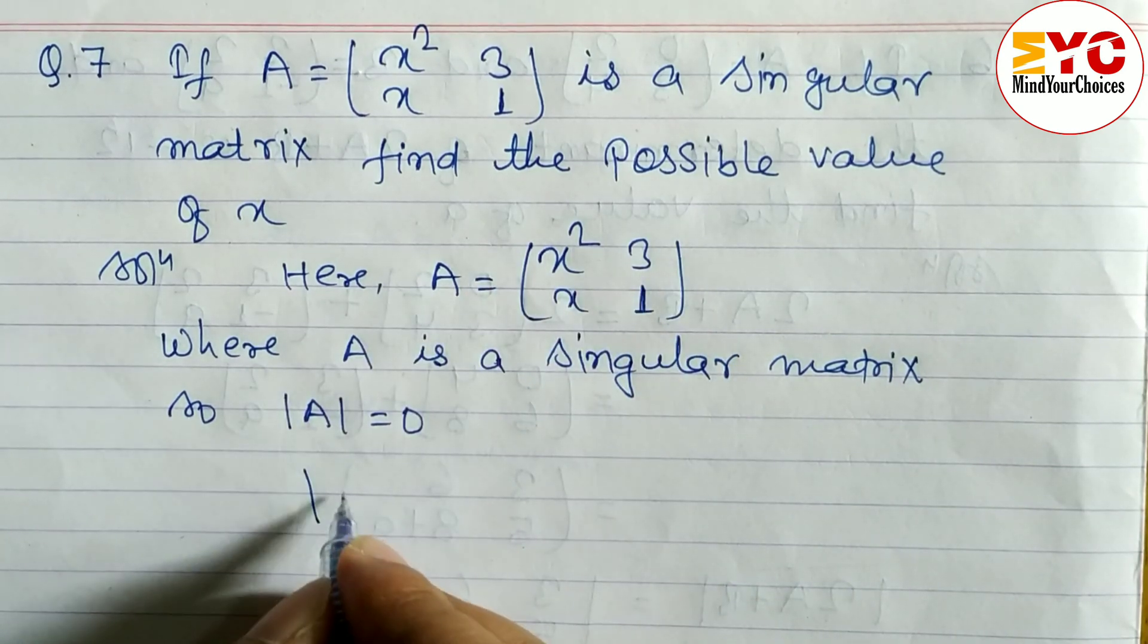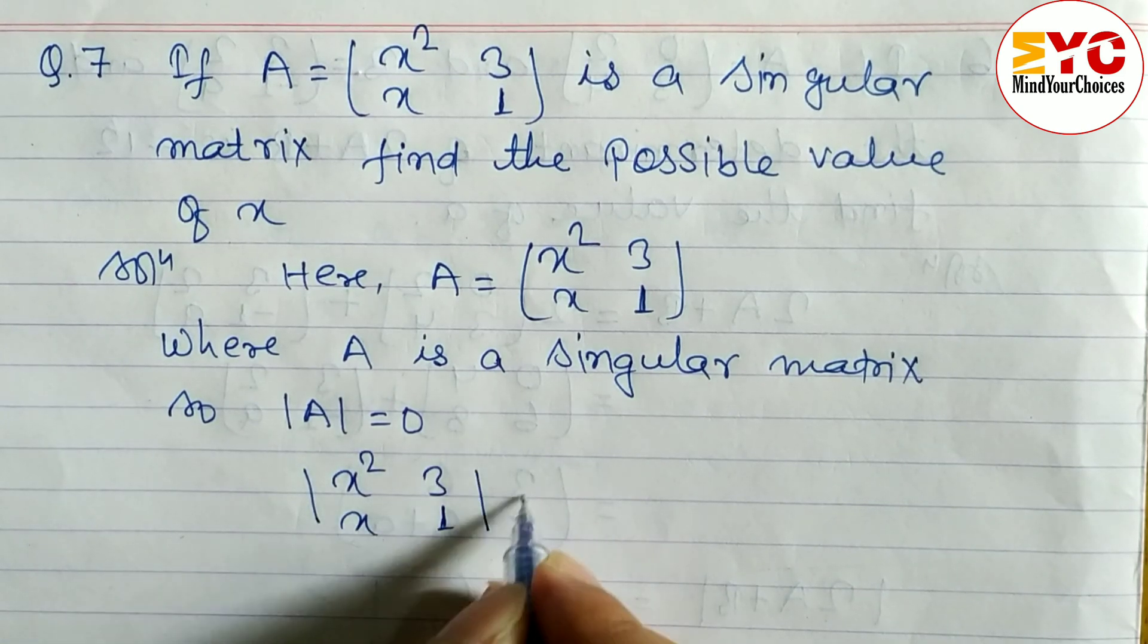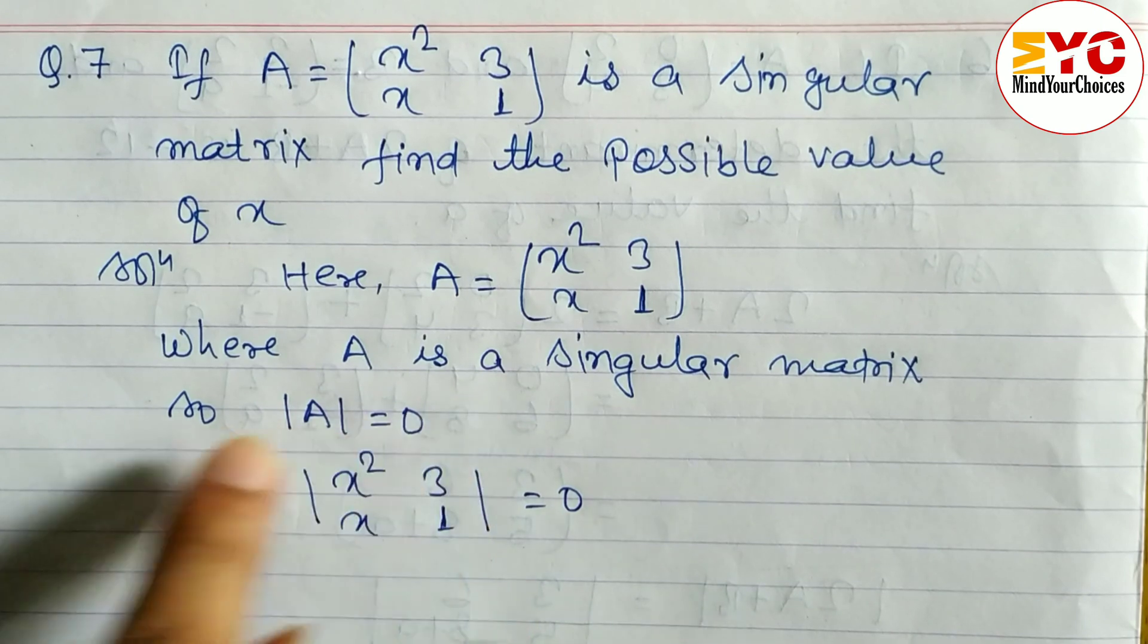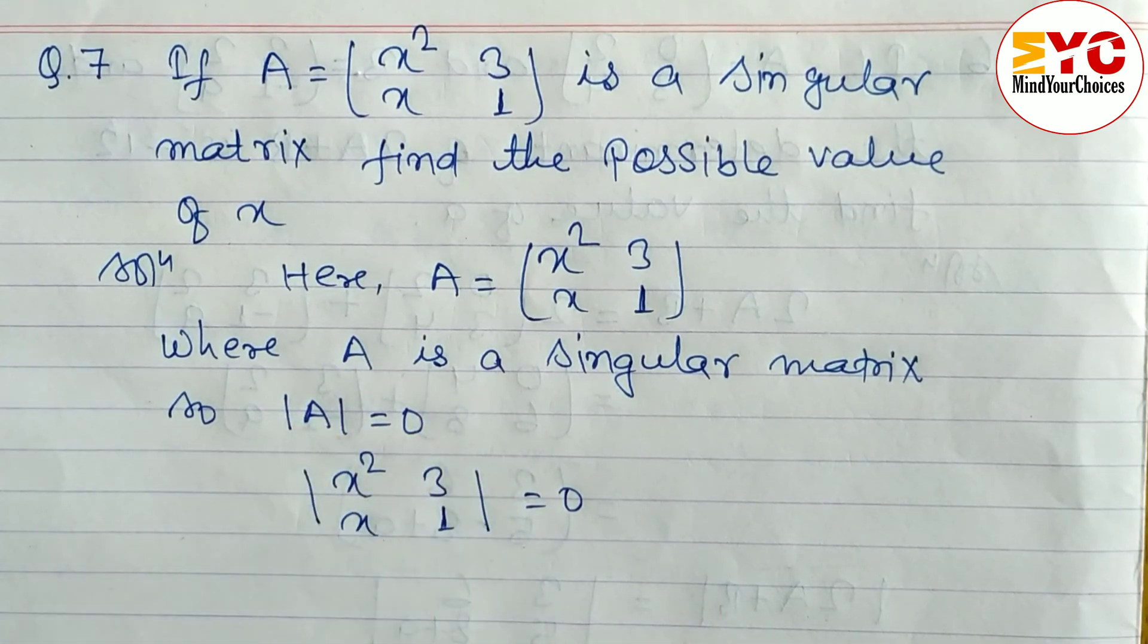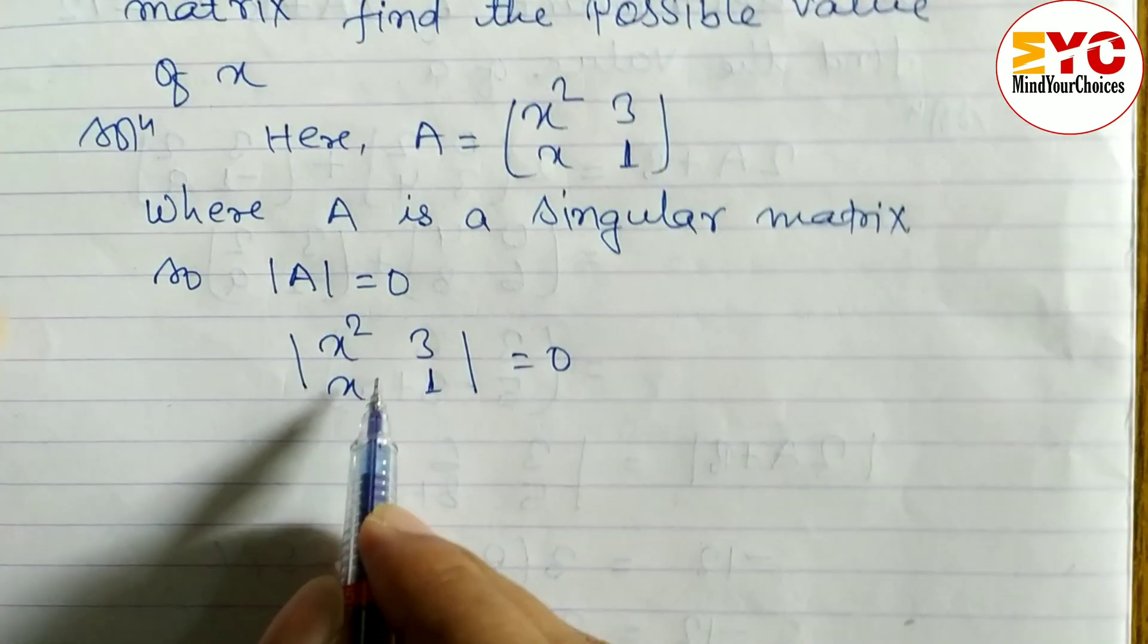First of all, we have to find out the determinant of this. So we can write here |x² 3; x 1| equals 0. Determinant A is equal to 0. In place of A, write the matrix A. Now to find out the determinant, we have to cross multiply.